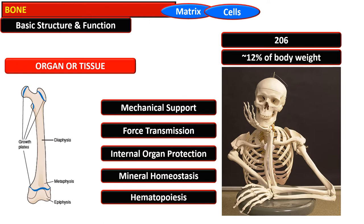Grossly the bone can be divided into many parts: the diaphysis is the shaft of the bone, the epiphysis is the area below the growth plate, and the metaphysis is the area near the diaphysis above the growth plate. Each bone is covered by a fibrous tissue called periosteum, which has two layers — an outer fibrous layer and an inner cambium layer. The inner cambium layer has the tendency to regenerate and is attached to the underlying cortex through Sharpey's fibers that go perpendicular to the periosteum.